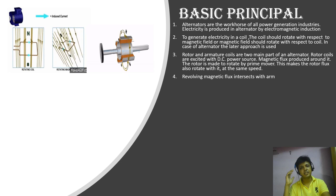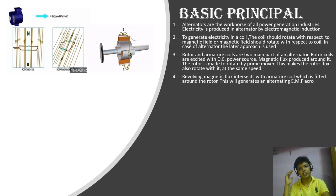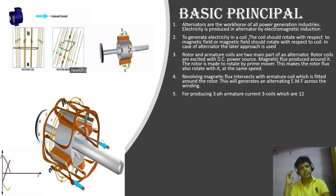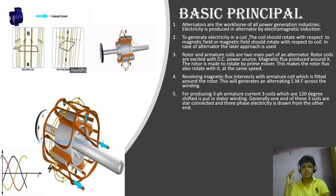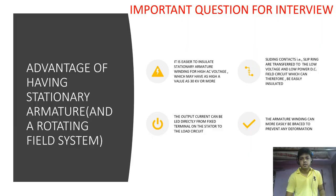The revolving magnetic flux intersect with the armature coil which is fitted around the rotor. This will generate an alternating EMF across the winding. For producing three-phase armature current, three coils which are 120 degree shifted is put in the stator winding. Generally one end of these three coils are star connected and three-phase electricity is drawn from the other end.